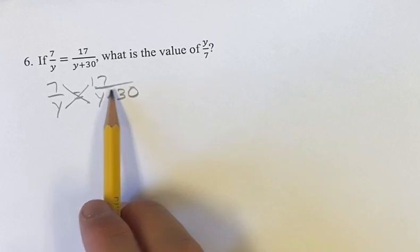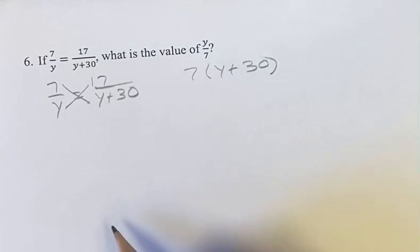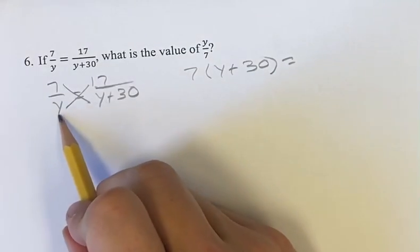So we're going to have 7 times y plus 30 is equal to y times 17.